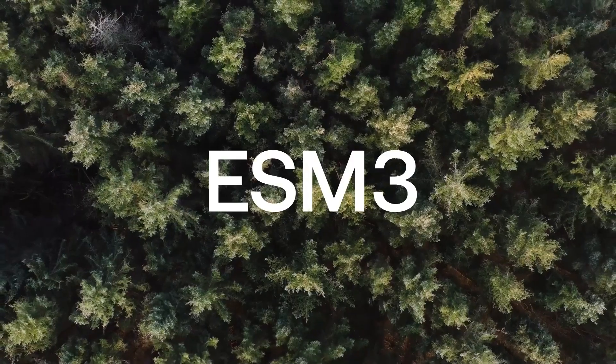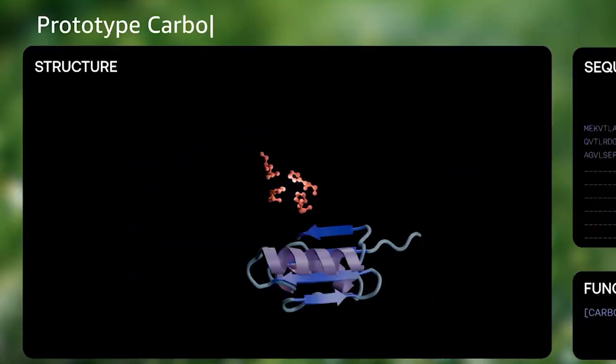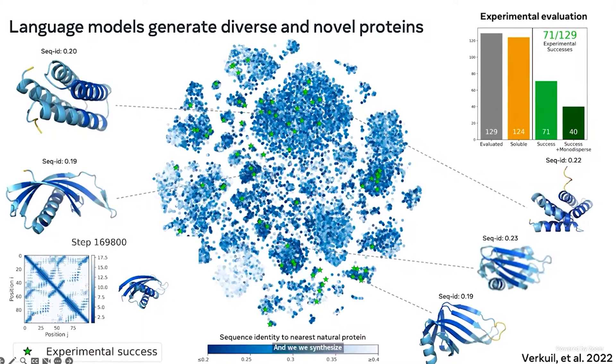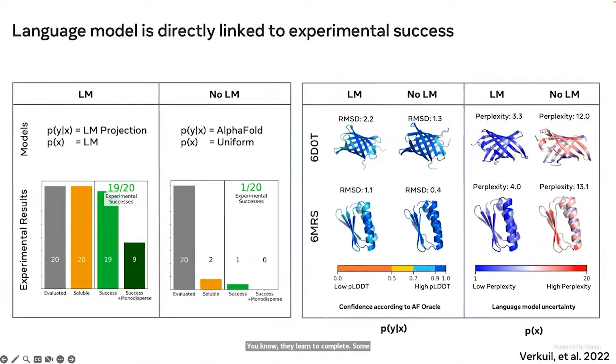With ESM3, scientists can design novel proteins in silico, allowing them to prototype new drugs faster than ever before.